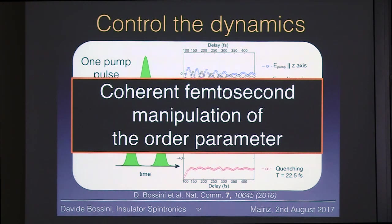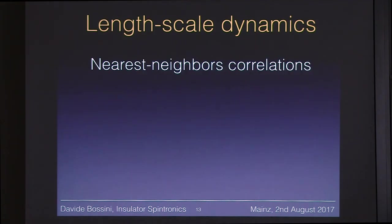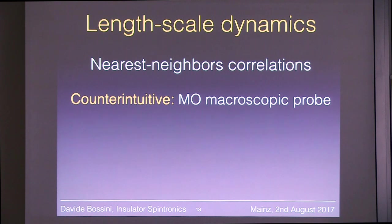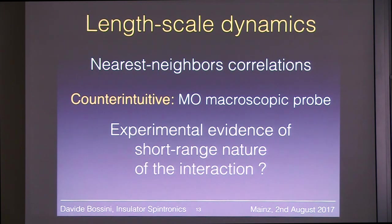When you do such an experiment, you open up a novel physical regime and also raise important questions. A key point for me is the length scale of the dynamics. We measure spin-spin correlations, but the typical length scale of these dynamics is on the order of one nanometer. Yet magneto-optics is a macroscopic method — it's not sensitive to a single spin like spin-polarized STM. This raises the question: how can we see something occurring on a one-nanometer length scale with magneto-optics? We were looking for an experimental fingerprint confirming that only short-wavelength magnons contribute, with no contribution from long-wavelength magnons.